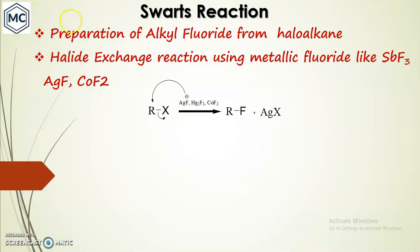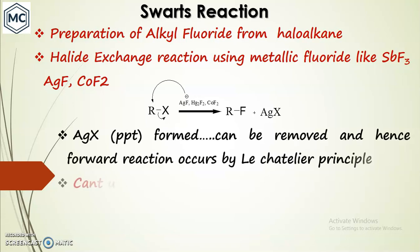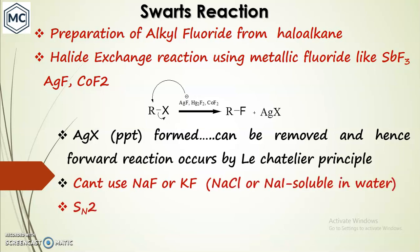This is the general scheme: an alkyl halide substrate reacts with metallic fluorides, and the fluoride F⁻ is a nucleophile while the carbon is an electrophilic center. A bond forms and you get the corresponding fluoride. There is also formation of a byproduct, silver halide. Silver halide - whether silver chloride or silver bromide - is a precipitate, and that precipitate can be removed, driving the forward reaction.